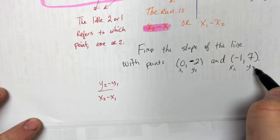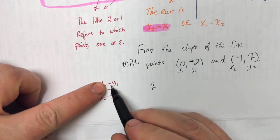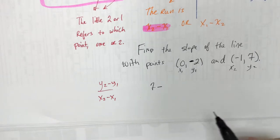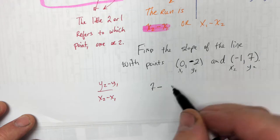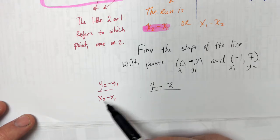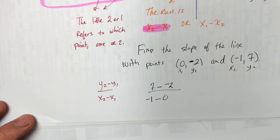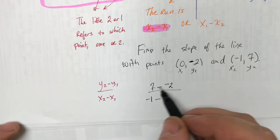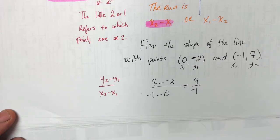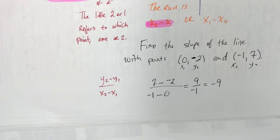x1, y1, x2, y2. So y2 is 7, then there's a minus — that minus is part of the formula, so you have to write it. y1 turns out to be negative 2. You need them both. x2 is negative 1, minus, and x1 is 0. Do order of operations — that becomes 9 over negative 1, which equals negative 9.